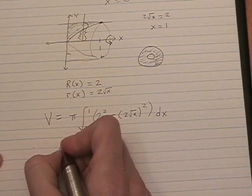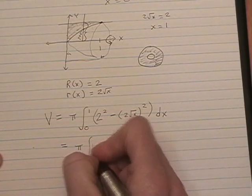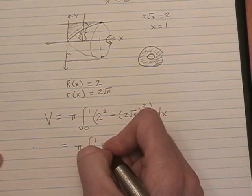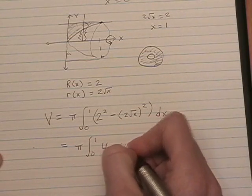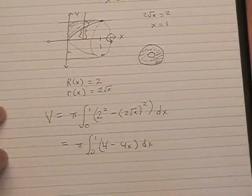Now, we're going to simplify this. And this is basically 4 minus 4x. And that should be a fairly simple integral.